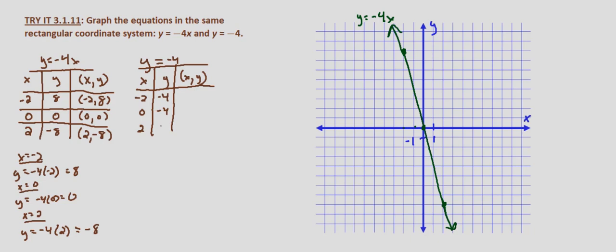At x equals 2, y is negative 4. It doesn't matter what value we put in for x; y is always going to be negative 4.